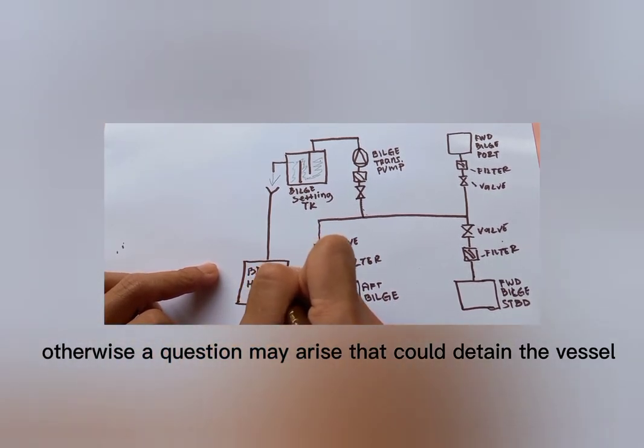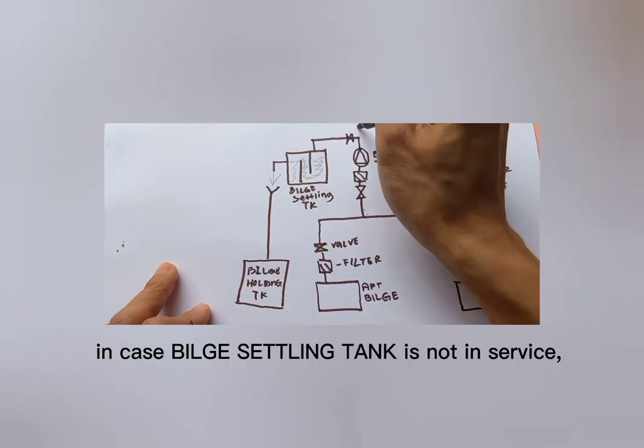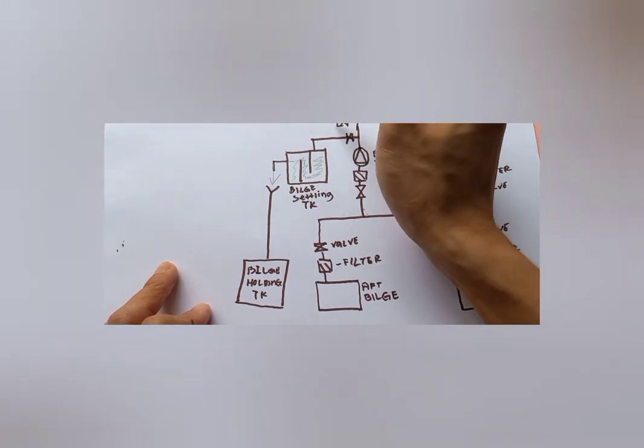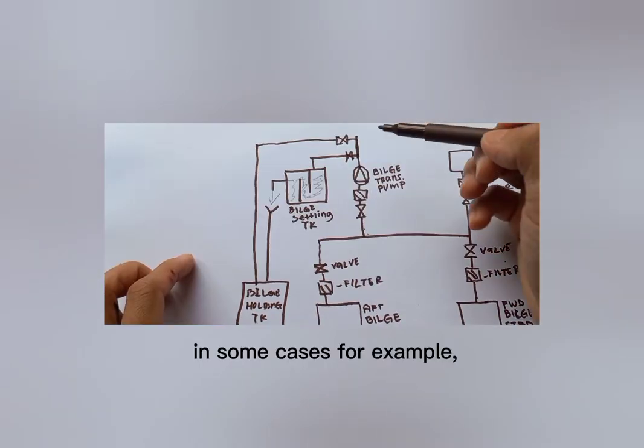In case bulge settling tank is not in service, engine personnel can transfer the bulge water directly to the bulge holding tank. In some cases, for example long stay at port or the vessel is in dry dock.